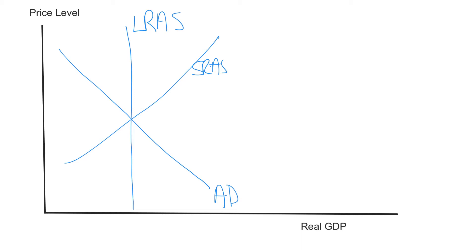We're looking at a very similar picture from the static model, but what is different now is we're going to let all the curves move. In a typical year, each one of these curves is drifting to the right, because in general our population is growing, our technology is increasing, and there are many reasons that our long-run aggregate supply curve is generally shifting to the right — our potential GDP as well.